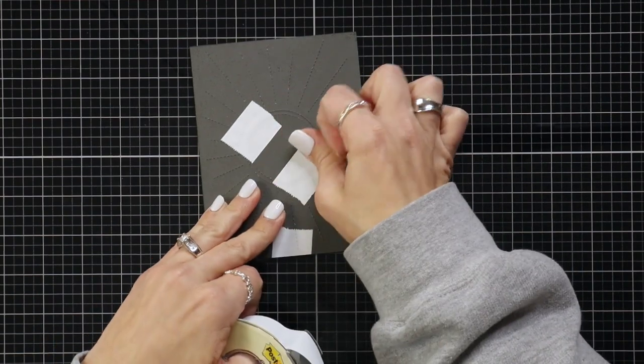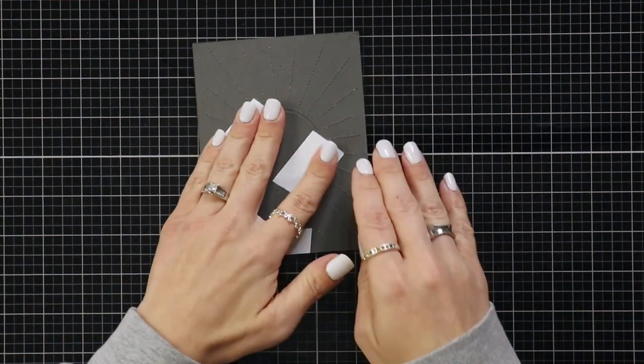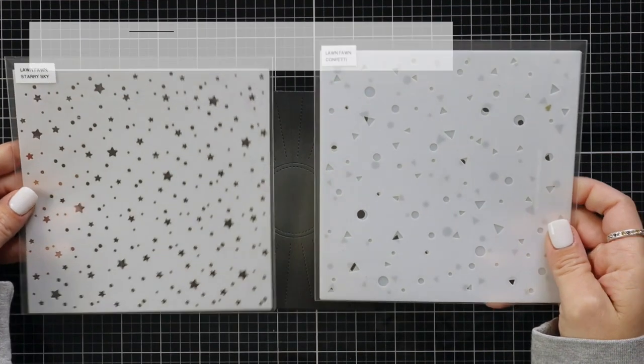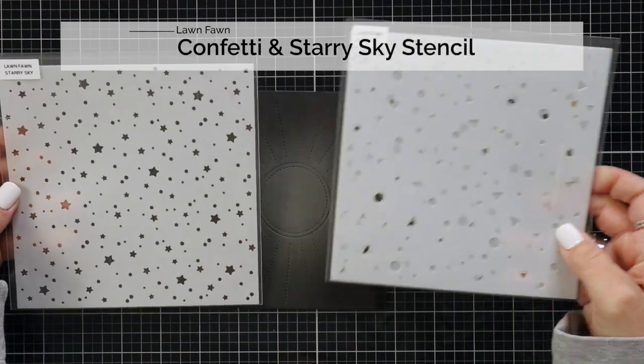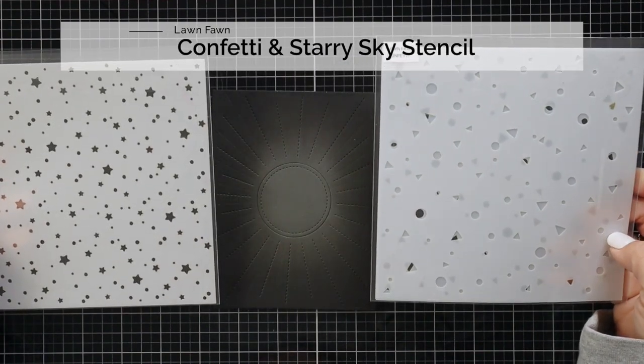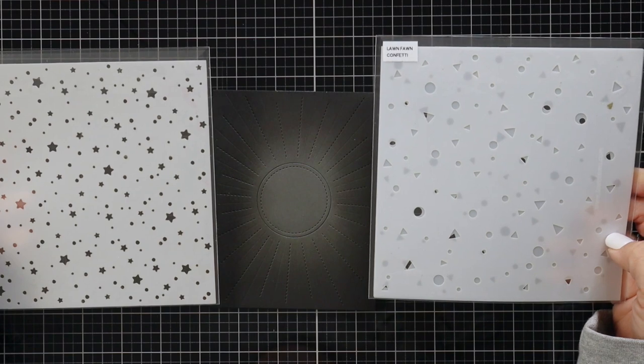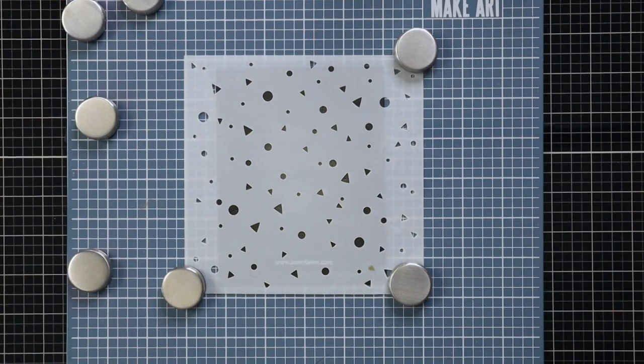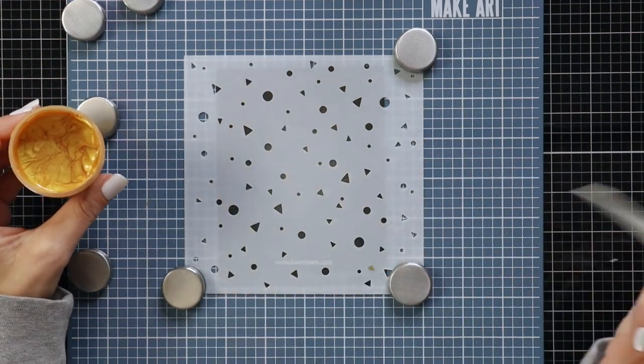I'm going to be applying a stencil to the front and I had a hard time deciding which stencil I wanted to use. There are two of them I was deciding between: the starry sky and also the confetti. Both of them would be great but I don't use the confetti one enough so I decided to go with that today and it is a two-piece stencil but I'm only going to use the one layer.